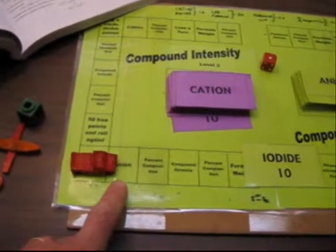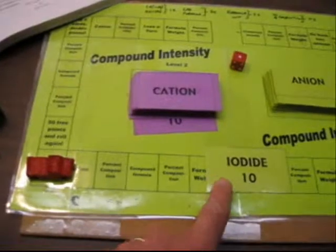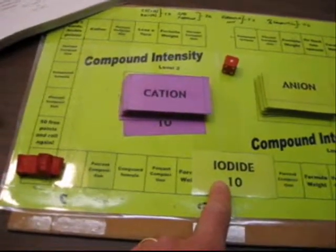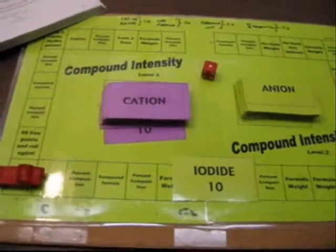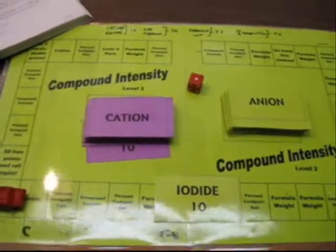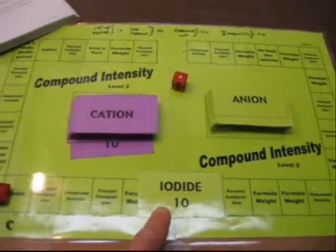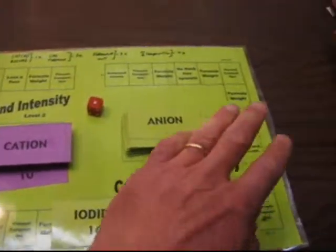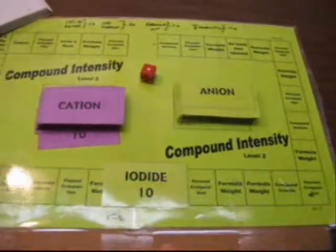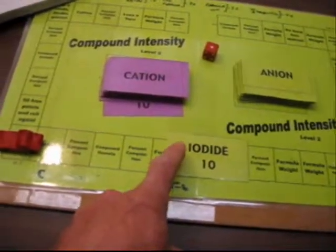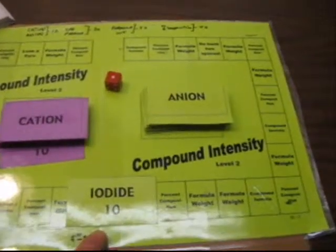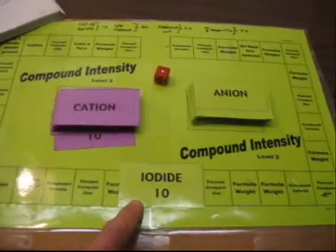If that team has a mistake in their symbol and charge, let's say they put I-2 and had an incorrect charge, what you'll do then is announce to all the teams playing the game that there's a chance to steal. What that means is, the other teams who have also written on their paper the symbol and charge for iodide, if they have it correct, they'll earn those ten points.